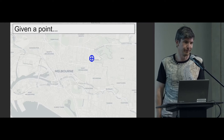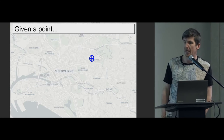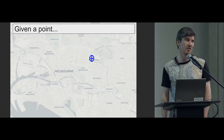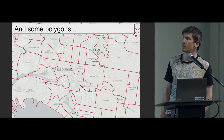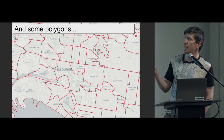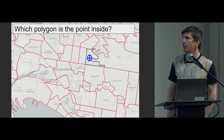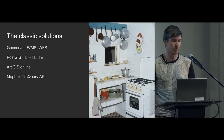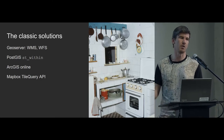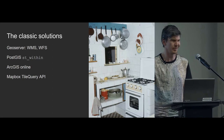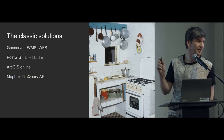So this talk: point in polygons. We start with a point — in this case, let's say a random address in Abbotsford in Melbourne. We have some polygons, let's say some suburb boundaries, and we want to know which suburb that address is within. That is what a point-in-polygon lookup is. It's a really classic problem. People need to know what electoral boundary is this address within, which statistical area, which state, which territorial authorities in New Zealand, which time zone, which country.